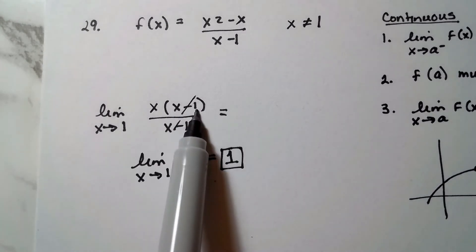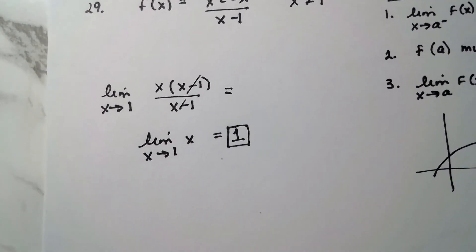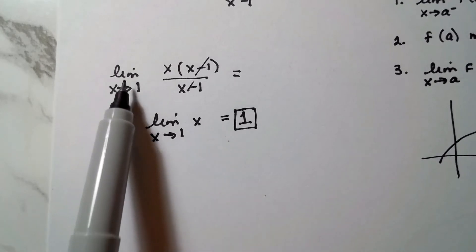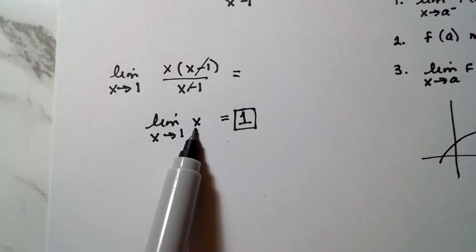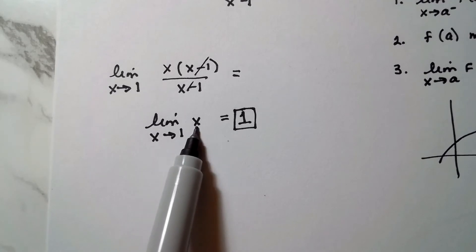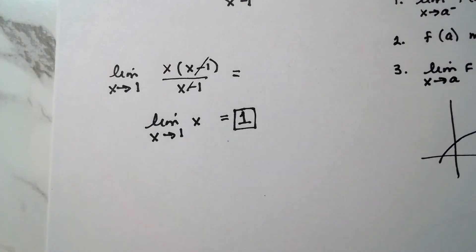So what I did was I factored on top, canceled the factor top and bottom. And so what we have now is the limit as x approaches one of x. Well, at this point here, I'm going to plug the one in here. So the answer is one.